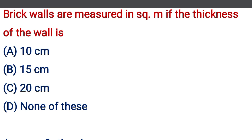The first question: brick walls are measured in square meter if the thickness of the wall is — option A: 10 cm, option B: 15 cm, option C: 20 cm, option D: none of the above. The correct answer is option A, 10 cm.